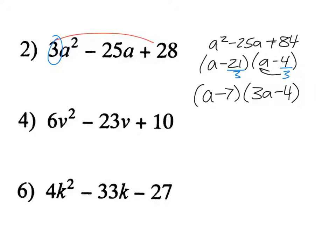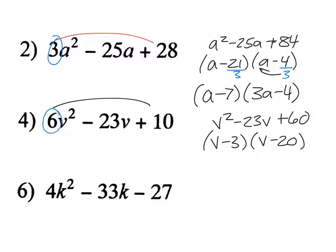Let's just go ahead and keep working this way. And then we'll go back to the other side here. 6 times 10 would be 60. So I have plus 60. So I have v squared minus 23v plus 60. So factors of 60 that add to give me 23 would be 3 and 20. So I have v minus 3 and v minus 20 divided by my coefficient, which is 6. So right here, it doesn't divide evenly into either one of them. So how do we remedy that situation?